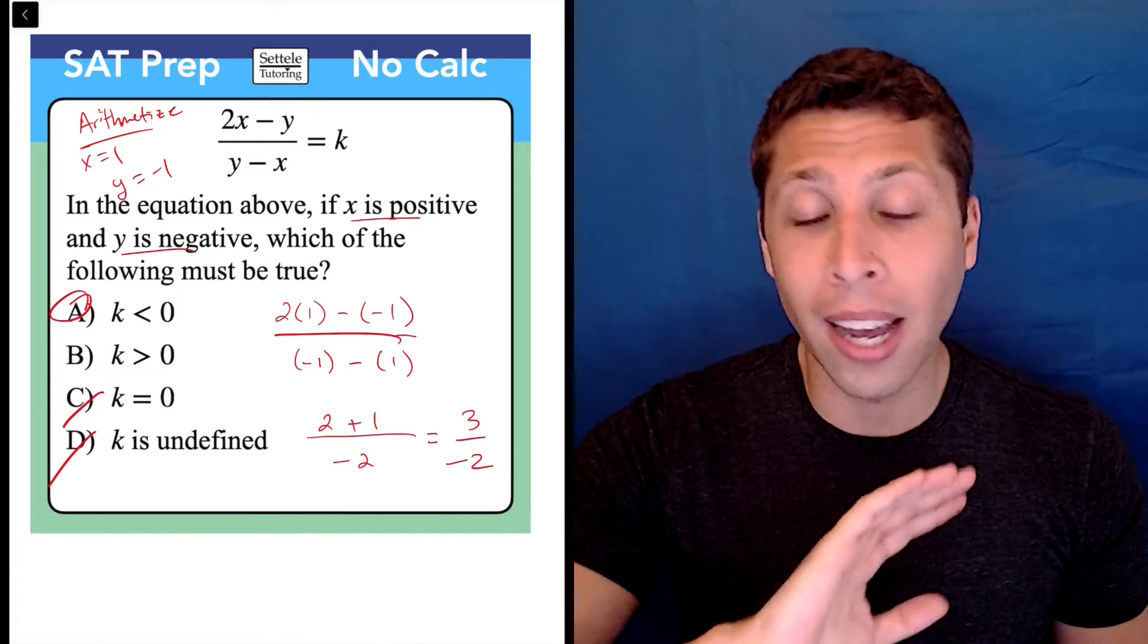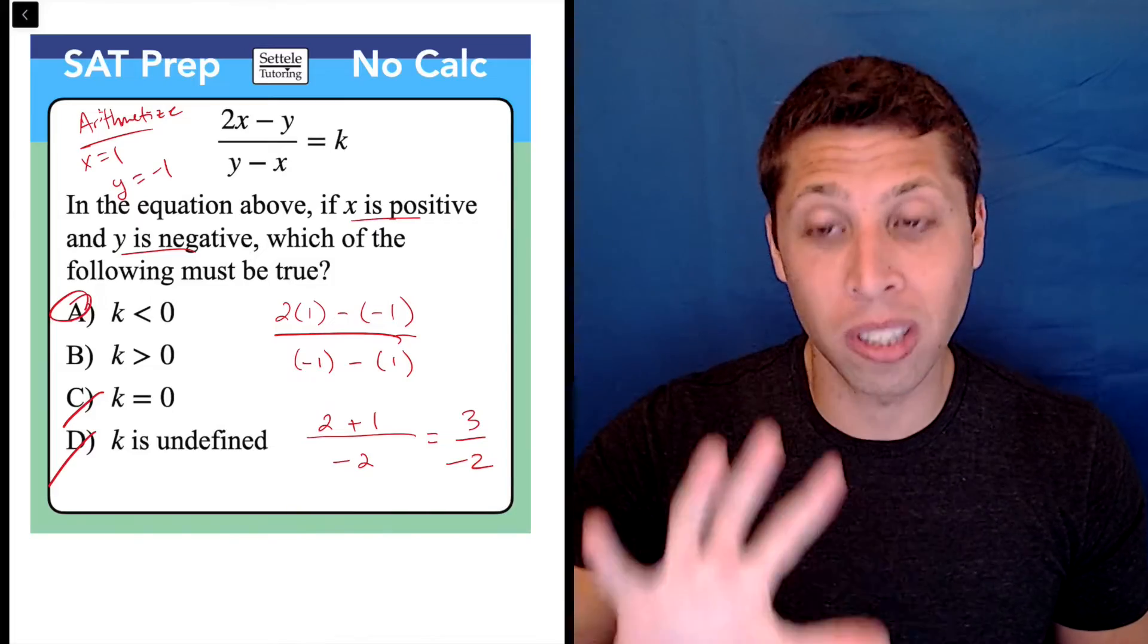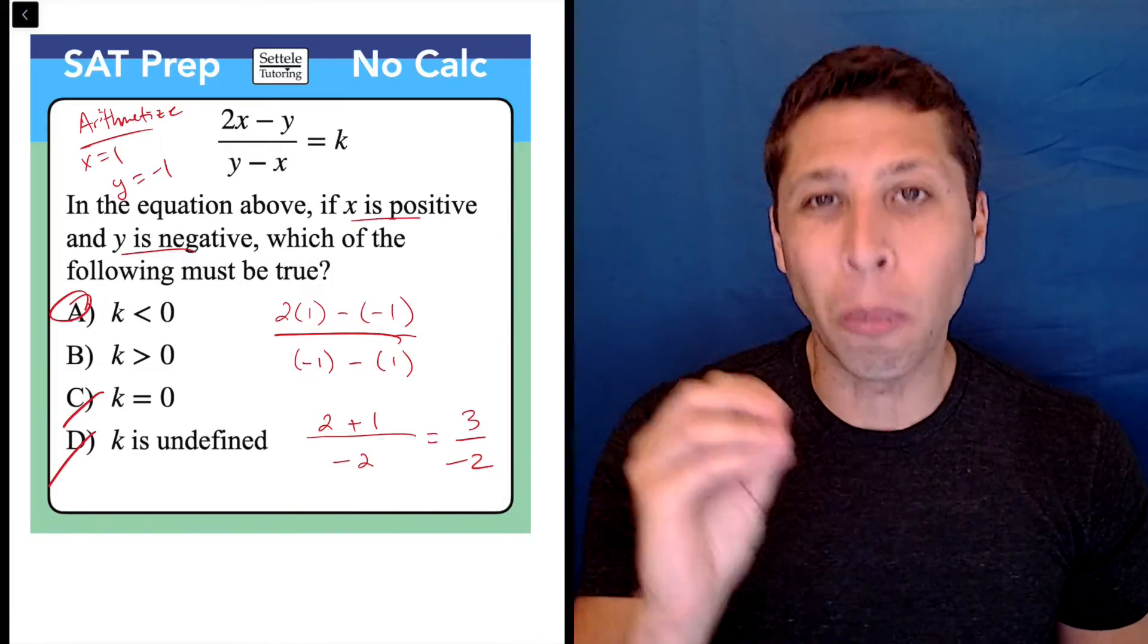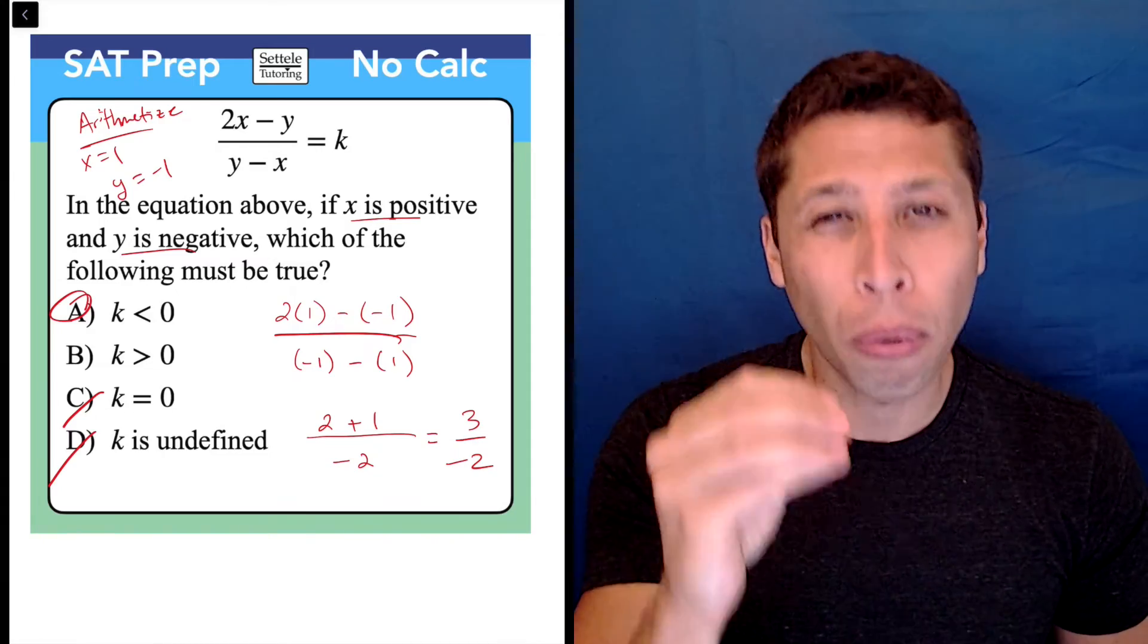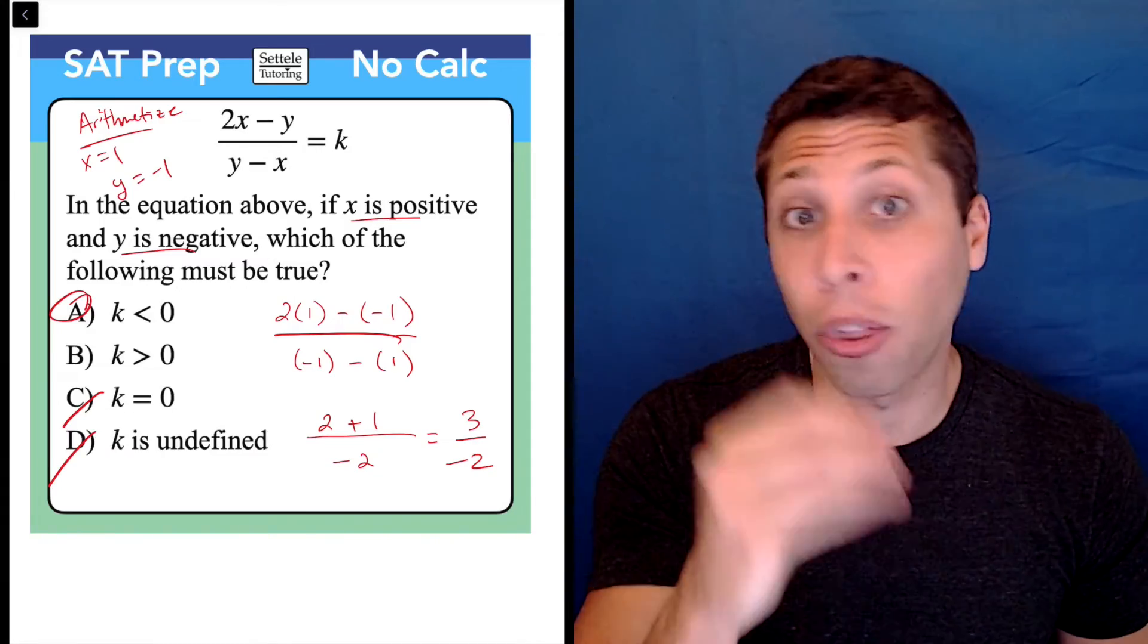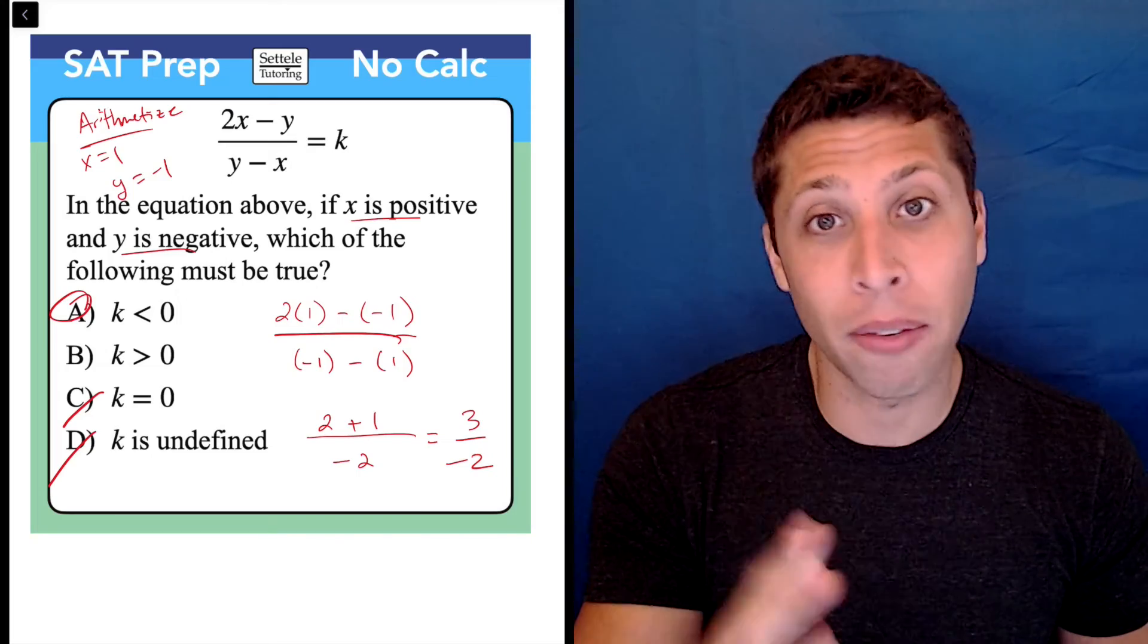That's the whole idea behind arithmetize: if we are forced to think conceptually about algebra, we are more likely to make a mistake. But if we have numbers and we can do arithmetic instead, we can prove our hunches by just seeing what the numbers do. Arithmetize whenever the algebra looks confusing.